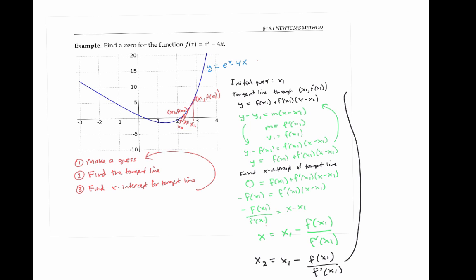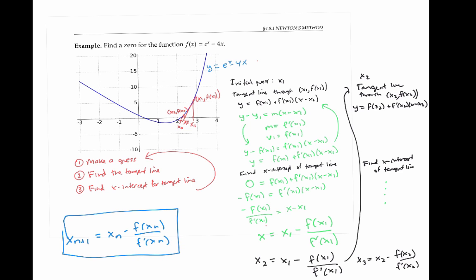Now we have our second guess x₂, and we can again find the tangent line through (x₂, f(x₂)). That tangent line will be given by the same sort of equation. And if we then find the x-intercept, the same algebraic steps get us to the analogous equation: x₃ = x₂ - f(x₂)/f'(x₂). And more generally, as we repeat this process over and over again, our (n+1)th guess is going to be given by x_{n+1} = x_n - f(x_n)/f'(x_n). That's the equation at the core of Newton's method.